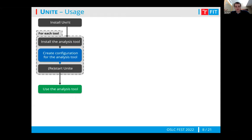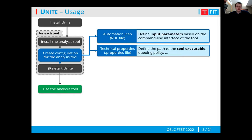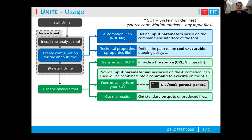Now let's talk about how you use Unite. First, you need to install it on your server along with the tool you want to use. You need to create some configuration files, restart Unite, and then you can start using the tool. The configuration consists of two steps. First, you need to define an automation plan, which is an OSLC resource. Most importantly, you need to define input parameters that will be used to run the tool, and these will be based on the command line interface of the tool. Then you need to define some technical properties — most importantly, the path to the tool executable, so that Unite knows how to run the tool.